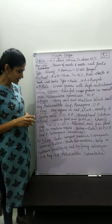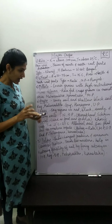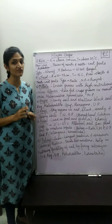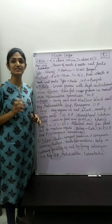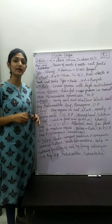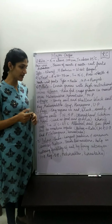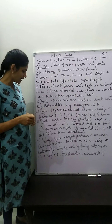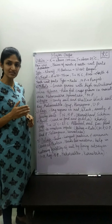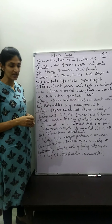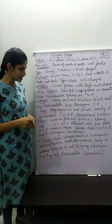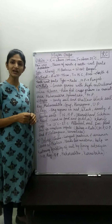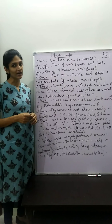Now let's talk about the states for maize. Although maize is primarily a Kharif season crop, Bihar is one of the states where maize cultivation also happens in the Rabi season. Apart from Bihar, other states where maize cultivation is significant include Madhya Pradesh, Uttar Pradesh, Andhra Pradesh, Telangana, and Karnataka.